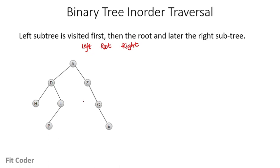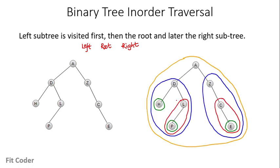If we are given this tree and we have to find the in-order traversal, we can find it by decomposing the tree into subtrees. The first step is to visit the left subtree, then root, then right. We start the traversal from A, and the left subtree for A is highlighted in blue. When we visit D, the left subtree is H, so the traversal starts from H, then goes to root D, then to the right subtree. When we reach there, we again visit the left node, which is P.